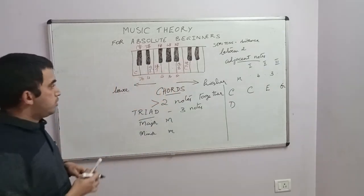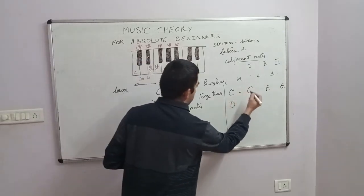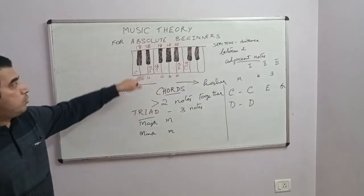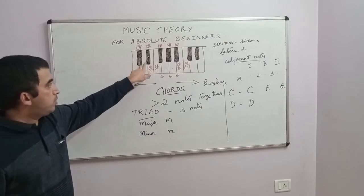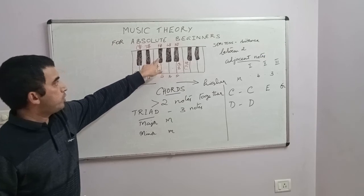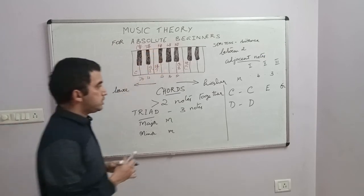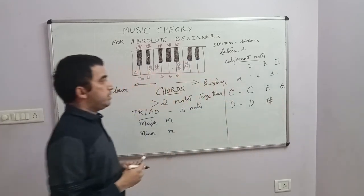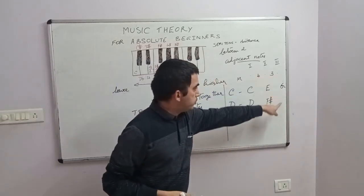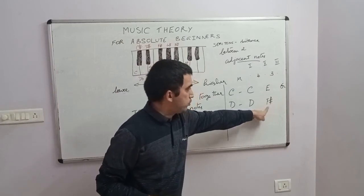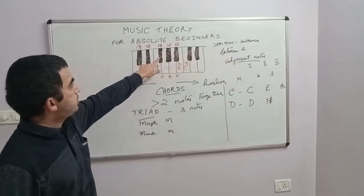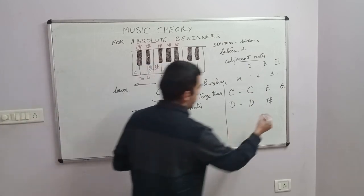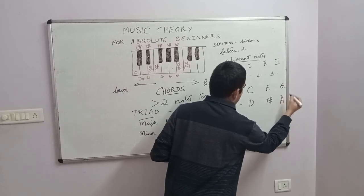How do you construct the D major chord? Because the name of the chord is D, the first note will be D. From D you count four semitones: one, two, three, four — this note is F sharp. Then three semitones from F sharp: F sharp, G, G sharp, A — so you reach the note A. Therefore the D major chord consists of D, F sharp, and A.